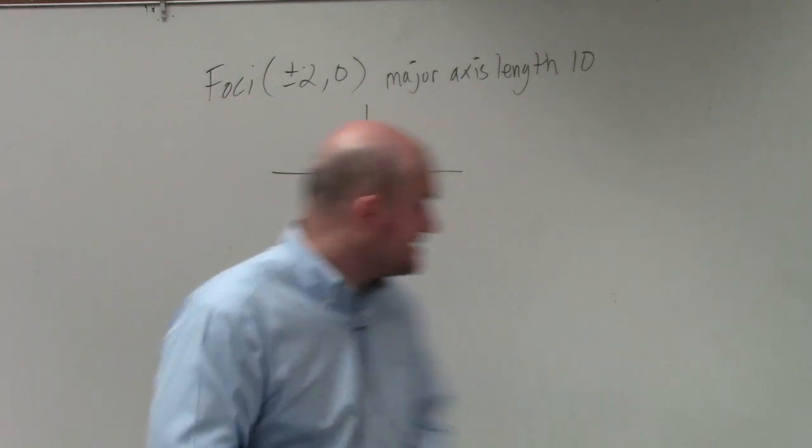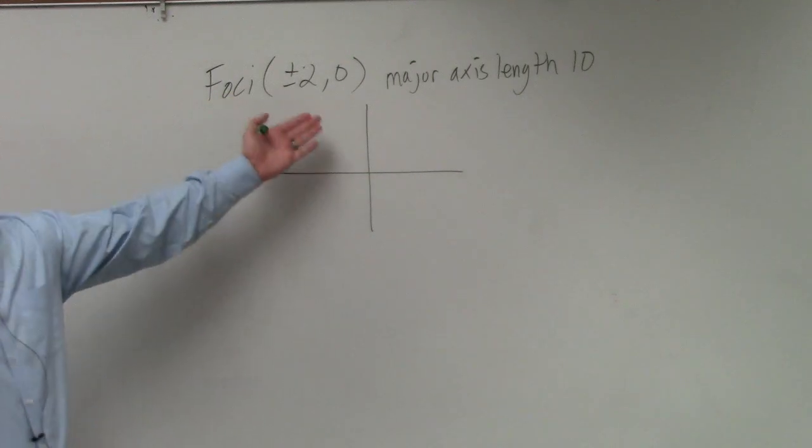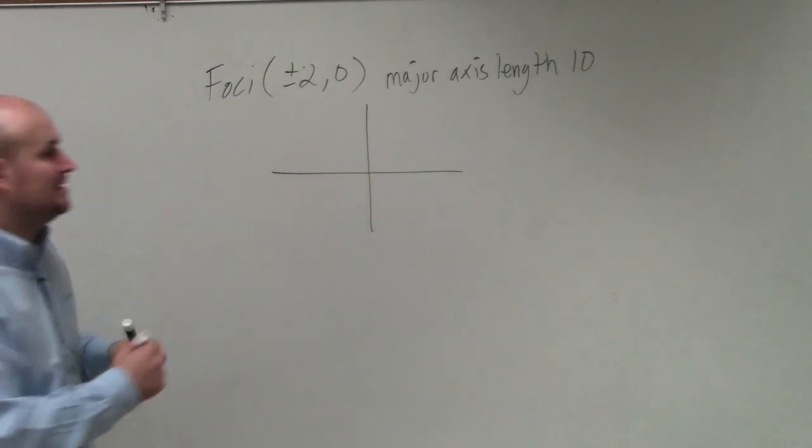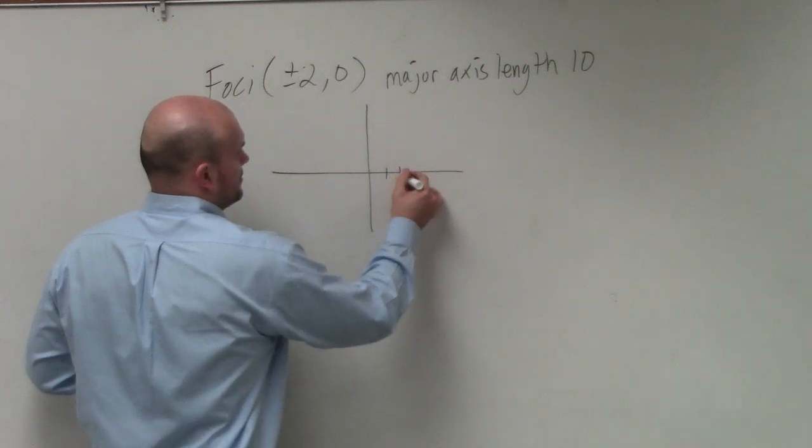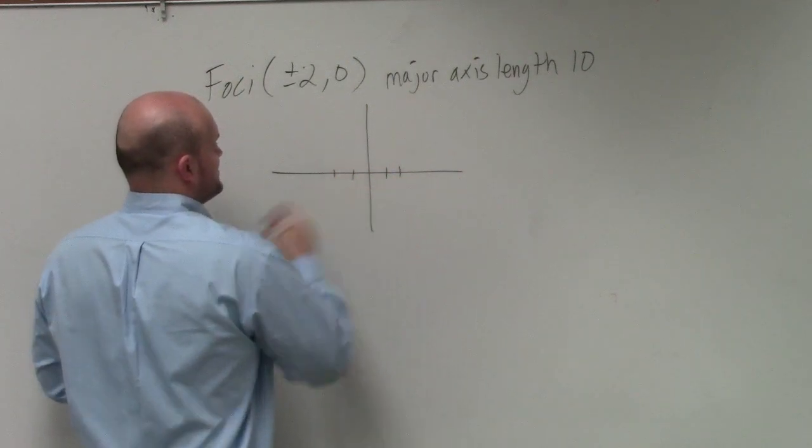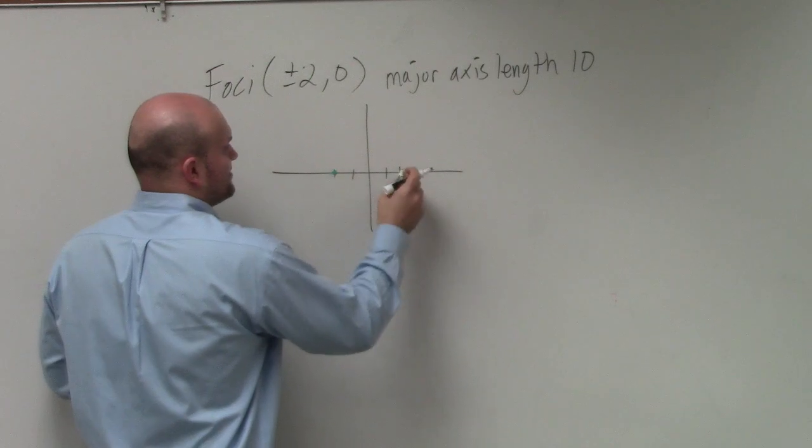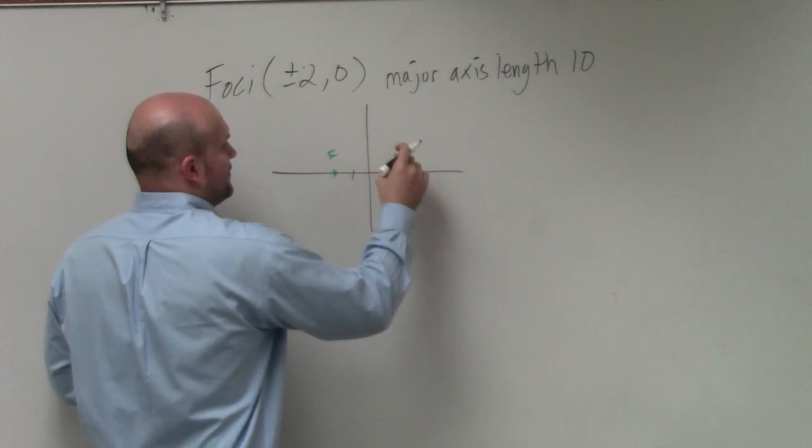So on this example, we have our two foci. Those are coordinate points, plus or minus 2 comma 0, which would be the point 2, 0 and negative 2, 0. So what I'm simply going to do is plot them and I'll just label them foci.